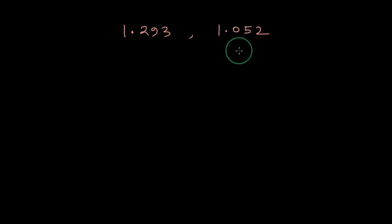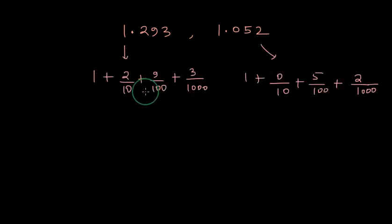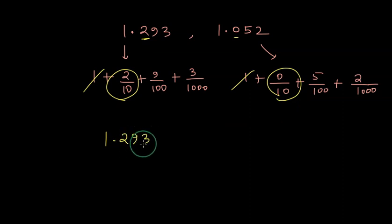So 1.293 and 1.052, let's see how we compare this. If we compare place values we cannot compare 1 and 1, but we can definitely compare the immediately next digit after the decimal point which is 2 in this case and 0 in this case. Because 2 is greater, 2 by 10 is greater than 0 by 10, so 1.293 is greater than 1.052.